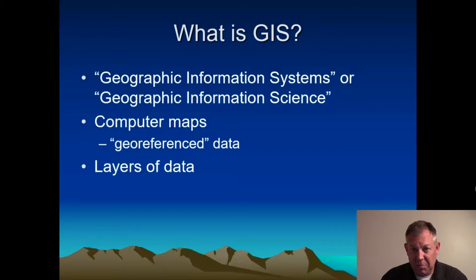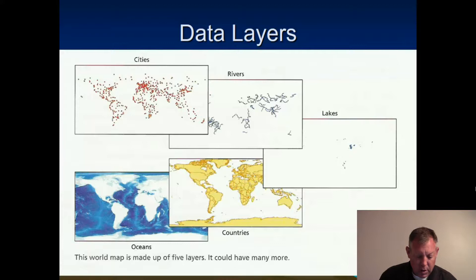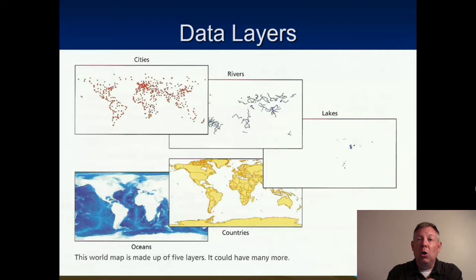Imagine overhead projectors — if you had some clear sheets with a few things drawn on them and you laid them all on top of one another and projected them on the wall, you could look at how all those different layers relate to one another. That's one of the things we're doing in GIS. Here's an example of several different types of data layers that all have a spatial component. They're all geo-referenced, and when you bring them into the software, it's smart enough to make them all line up.